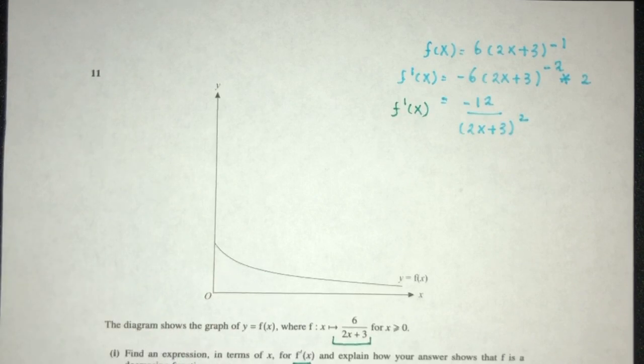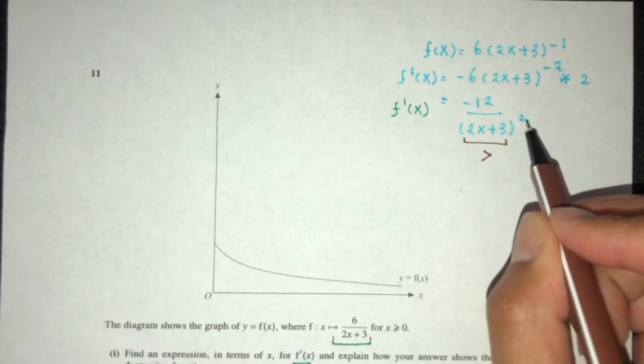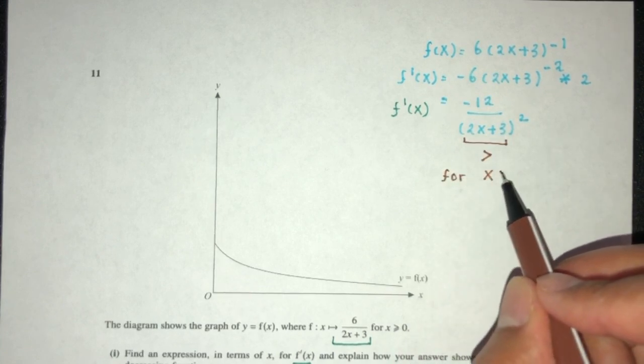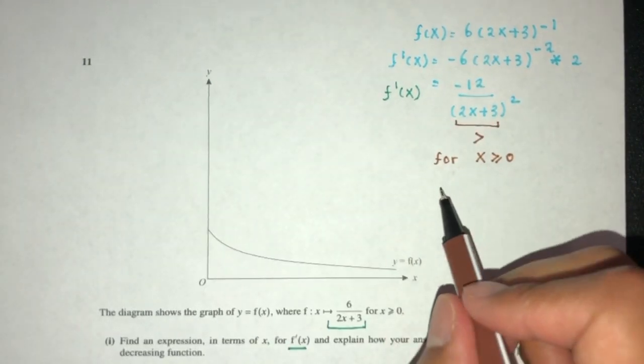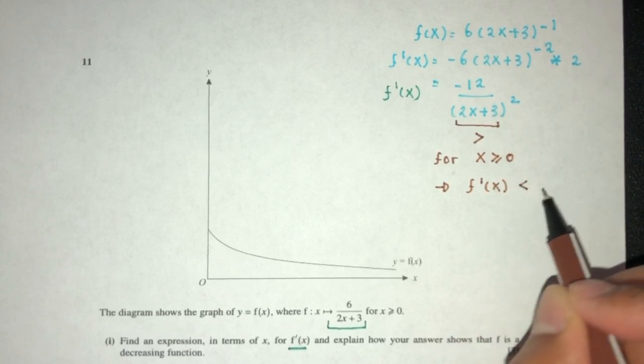Now you can explain that the denominator will be positive since it is squared. For any value of x, for any x more than 0 according to the domain given, we realize that f prime of x has to be less than 0.